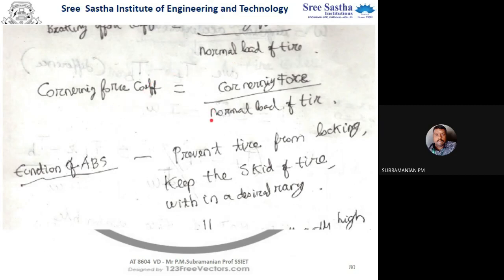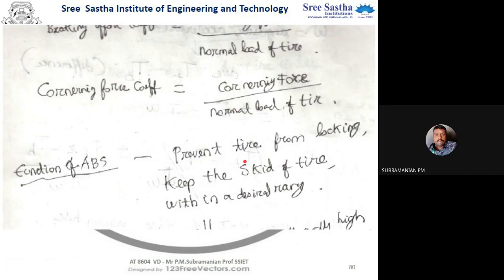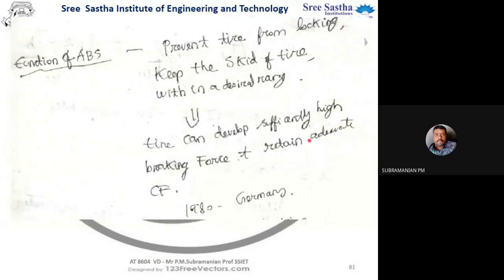ABS was devised in Germany in 1980. The ABS ensures the braking force stays in the desirable range so the wheel does not lock and skid remains controlled. Its functions are: prevent tire from locking, keep skid within the desired range, develop maximum braking force, and retain adequate cornering force.